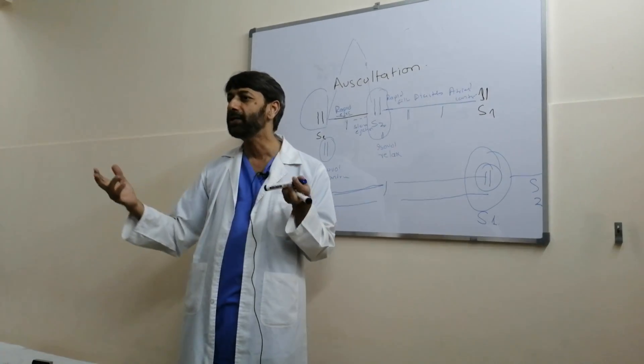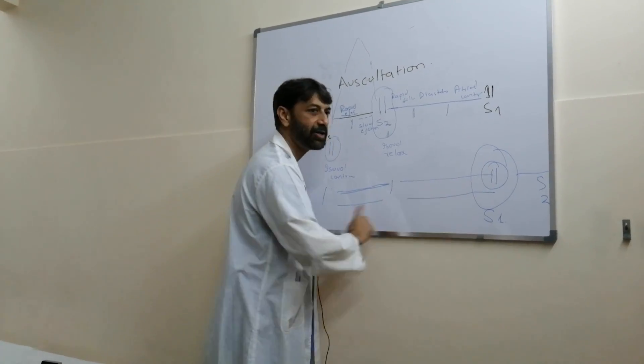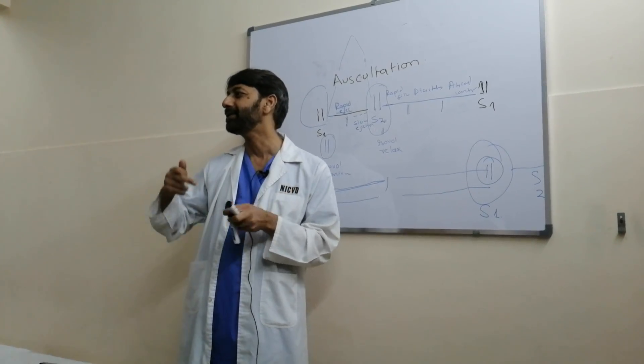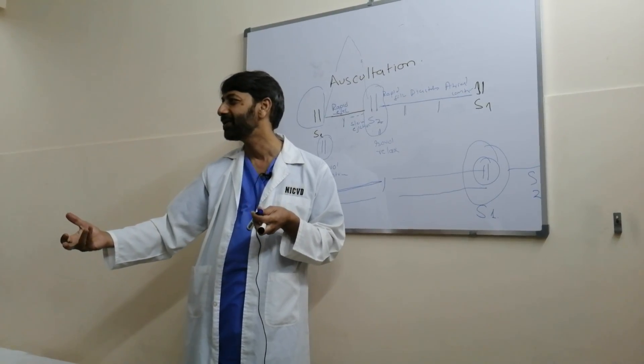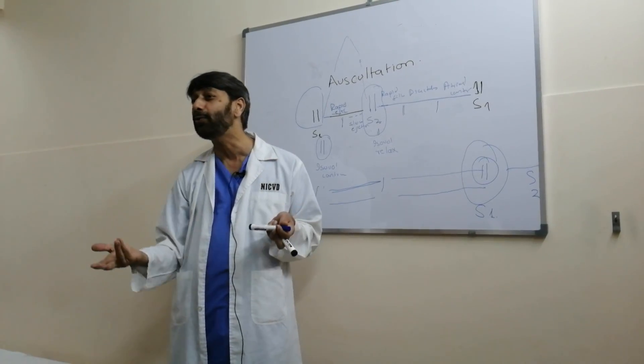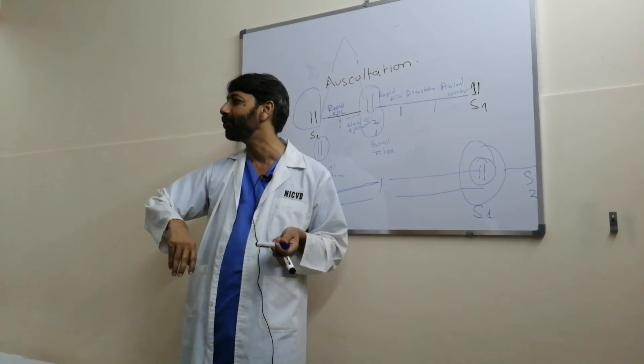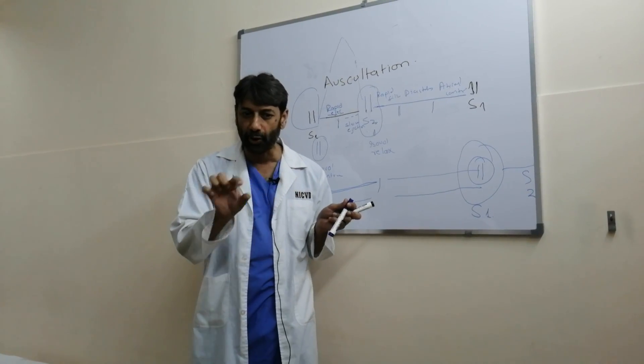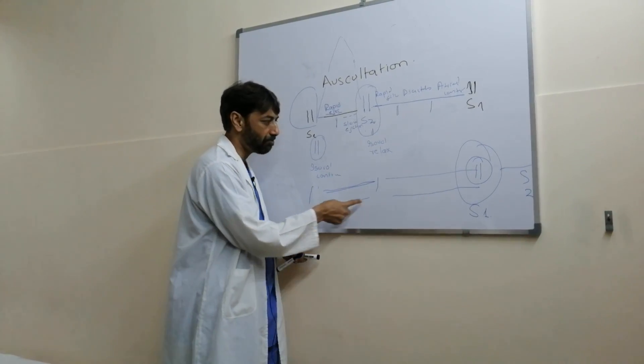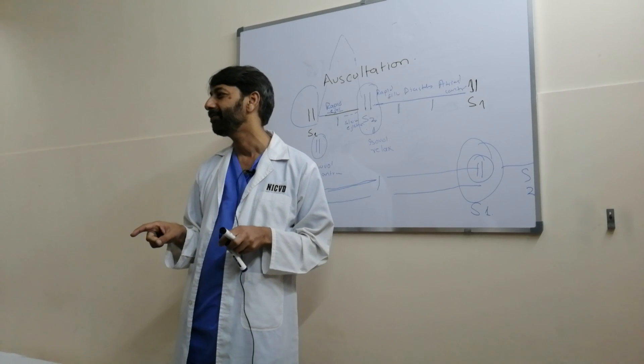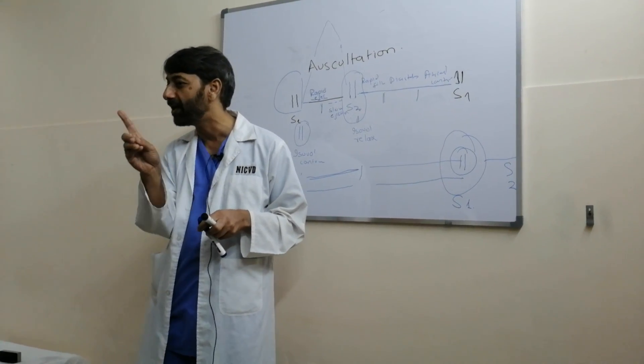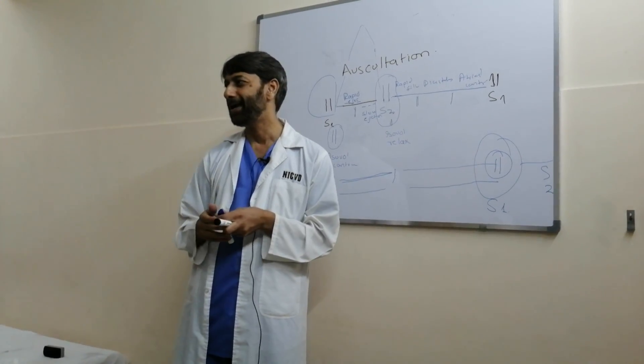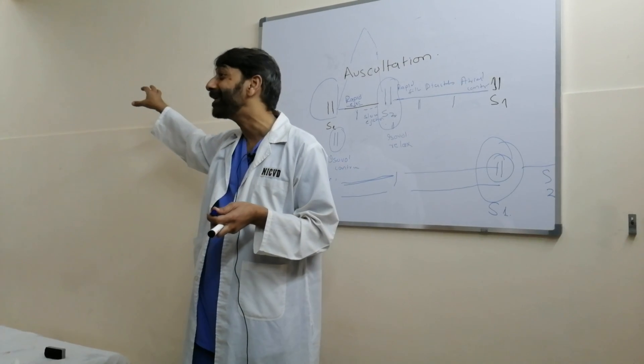Once you really become expert of judging first and second sounds in normal auscultation, then the next step is intensities, splittings, any details of these sounds, then additional sounds and then everything. But to really become expert in auscultation, you should be really master in judging normal people by auscultating and getting which one is the first and which one is the second heart sound. From now onward, make yourself habitual of auscultating normal people.